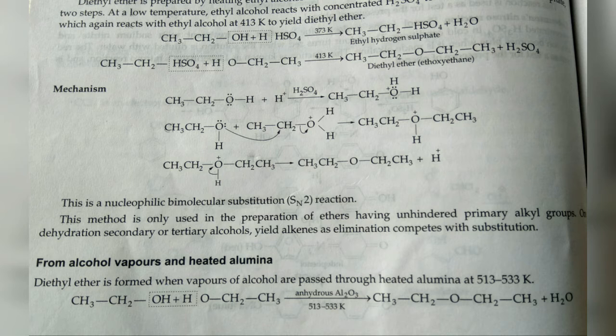In the last step, the hydrogen remaining with the oxygen comes out as oxygen uses its lone pair of electrons. This is a nucleophilic bimolecular substitution reaction — the first step is slow and the second step is fast. This method is also used in the preparation of ethers having unhindered primary alkyl groups. Secondary and tertiary alkyl groups undergo complete elimination reaction instead.